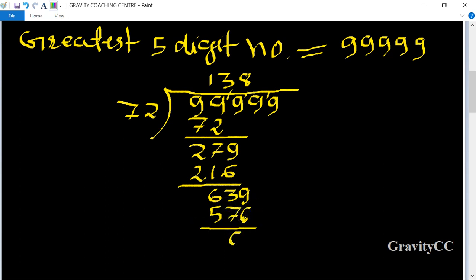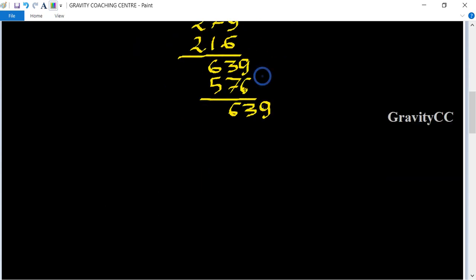8 times 72 is 576. Subtract from 639 to get 63. So 63 is the remainder.